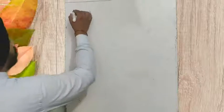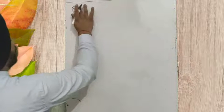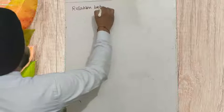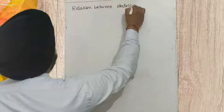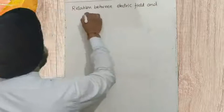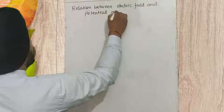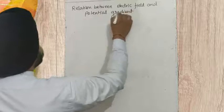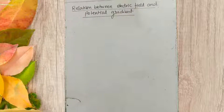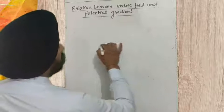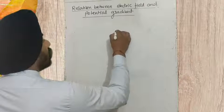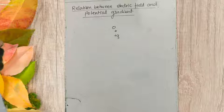This is a very important topic because many things depend upon this property of electric field, and one of the units of electric field is taken from this definition. So here we are finding the relation between electric field and potential gradient. For that, I'm going to take a source charge plus Q which is at point O.